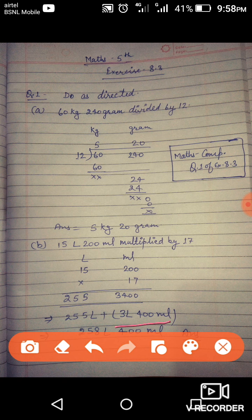Milliliters become 3 liter 400 milliliter. Add 3 liters to the 255 liters already there, we get 258, and 400 milliliters. So the answer is 258 liter and 400 milliliter.